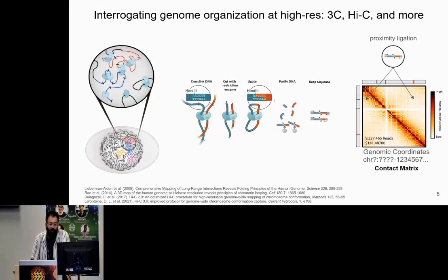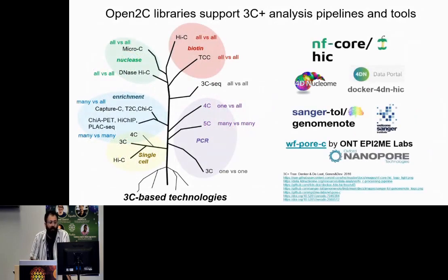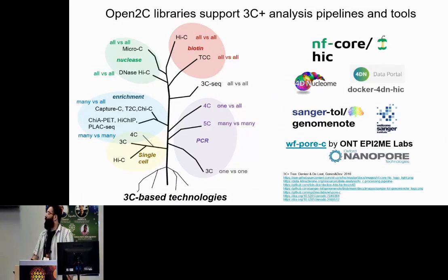From sequencing you get a contact matrix, as you can see on the right. On the left you will see the assays that Open2C libraries support, and on the right side you will see the pipelines that Open2C libraries support — including the nf-core Hi-C pipeline, 4D Nucleome Hi-C analysis pipeline, Sanger Tree of Life, and long-read Hi-C by Oxford Nanopore Technologies.